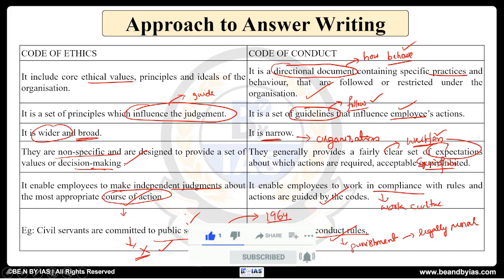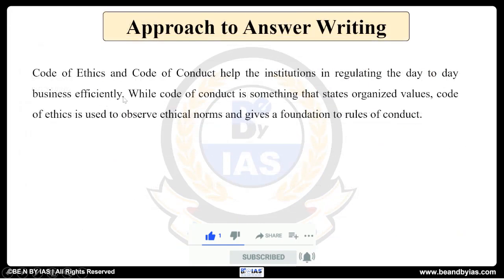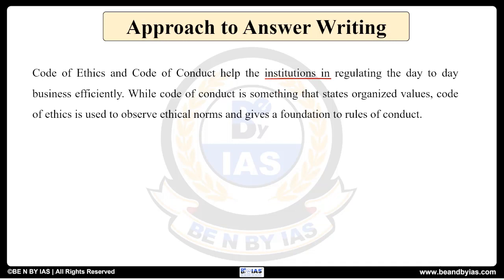Concluding this answer: code of ethics and code of conduct both help institutions in regulating day-to-day business activity. While code of conduct states organized values, code of ethics is used to observe ethical norms and gives a foundation to the rules of conduct. This is how we can conclude this answer.